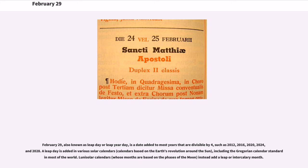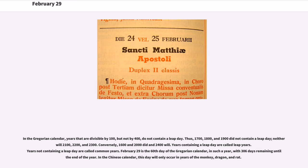In the Gregorian calendar, years that are divisible by 100 but not by 400 do not contain a leap day. Thus, 1700, 1800, and 1900 did not contain a leap day, and neither will 2100, 2200, and 2300. Conversely, 1600 and 2000 did, and 2400 will.